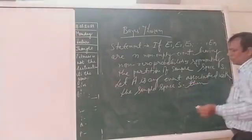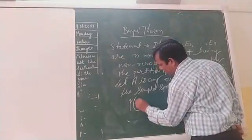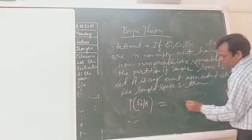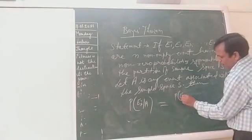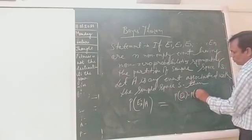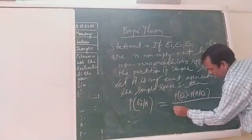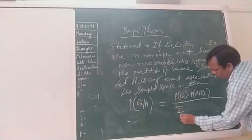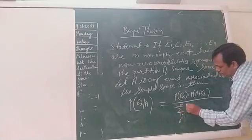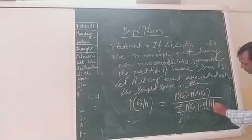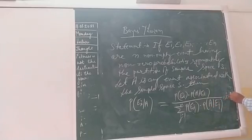Then P(Ei|A) equal to P(Ei) into P(A|Ei) by summation J equal to 1 to N, P(Ej) into P(A|Ej). Here I is equal to 1, 2, 3, so on, up to N. Noted everyone?